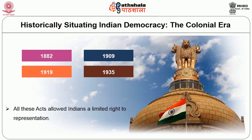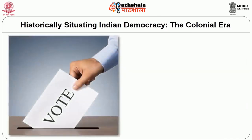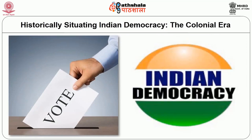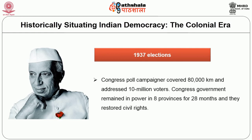We can also refer to the colonial legacy in the form of the Government of India Acts of 1882, 1909, 1919, and 1935. All these Acts provided some kind of representation to the Indians, preparing them for future democratic institutions — they learnt how to make laws and run democratic government. It was limited democratic exposure to the elites, as the right to vote was not given to all. In the 1937 elections, leaders like Nehru moved 80,000 kilometers addressing 10 million voters, and Congress formed governments in 8 states which restored civil rights.